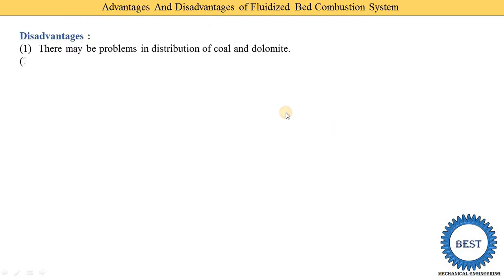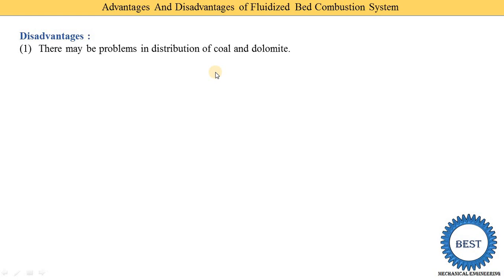Now the disadvantages of the fluidized bed combustion system. The first disadvantage is that there may be a problem in the distribution of coal and dolomite. When the mixture of coal and dolomite is supplied, it may not be properly distributed on the distributor plates.